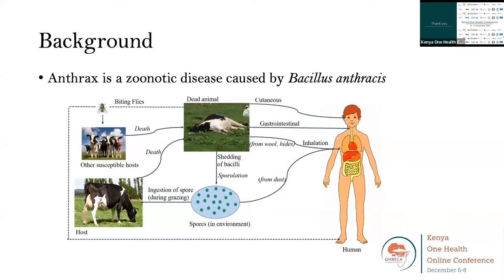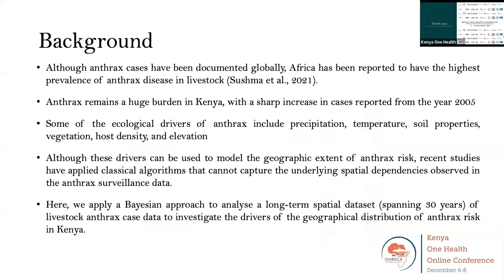Anthrax causes environmental contamination, massive economic losses in the agricultural sector, and is a public health burden in several countries, threatening biodiversity. Although anthrax cases have been documented globally, Africa has the highest prevalence in livestock. Anthrax remains a huge burden in Kenya, with a sharp increase in cases from 2005, likely due to improved surveillance following frameworks such as the Zoonotic Diseases Unit. Ecological drivers including precipitation, temperature, and soil are well known, but recent studies have applied classical algorithms that cannot capture the underlying spatial dependencies in anthrax surveillance data.